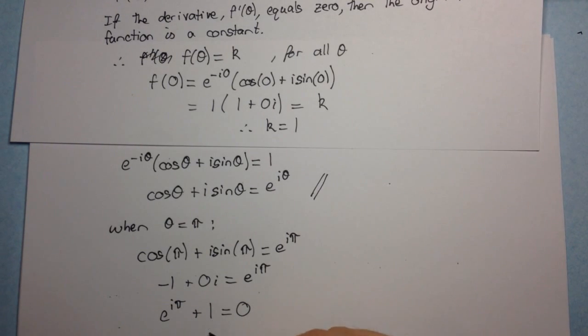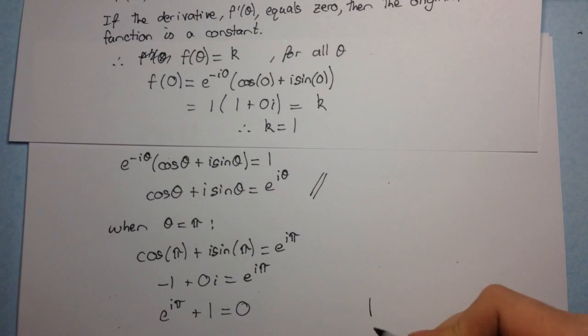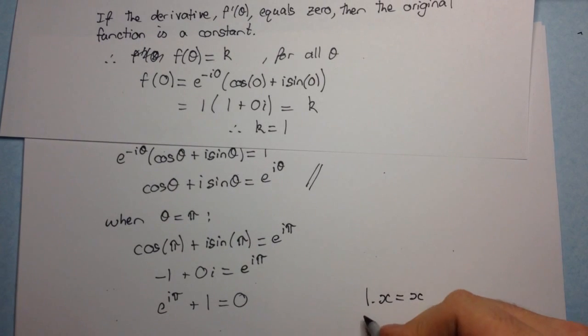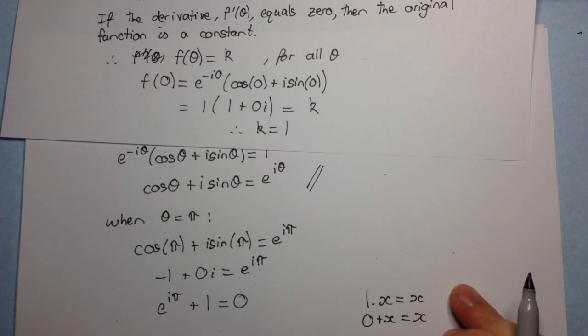We have one, which is the multiplicative identity. So what do I mean by that? So just one times x is equal to x. And zero, which is the additive identity, which means zero plus x is equal to zero. Now, you might not think these are very remarkable, but they do form the basis. In fact, all these five numbers form the basis of most of our maths now.